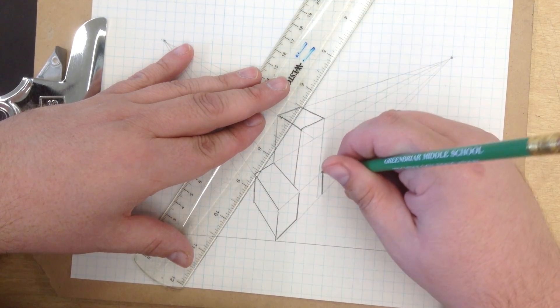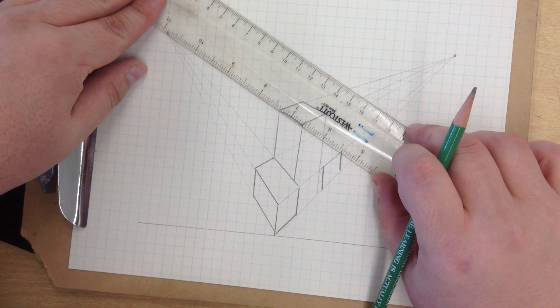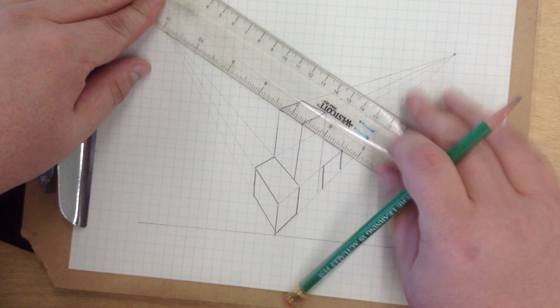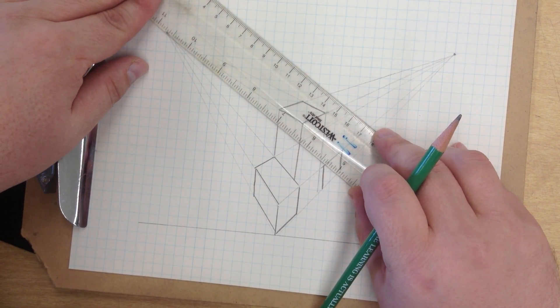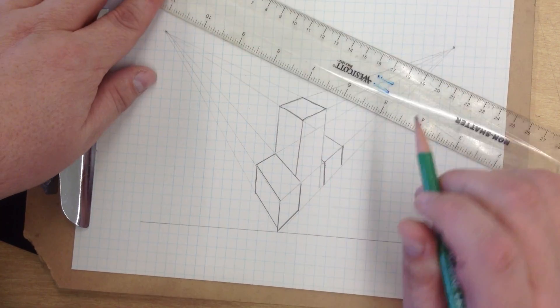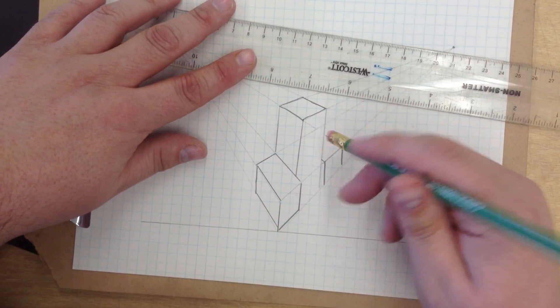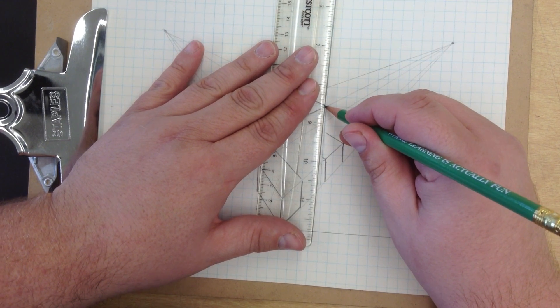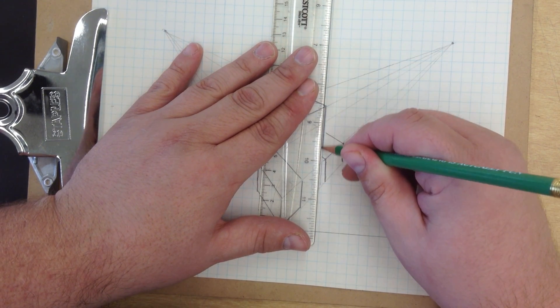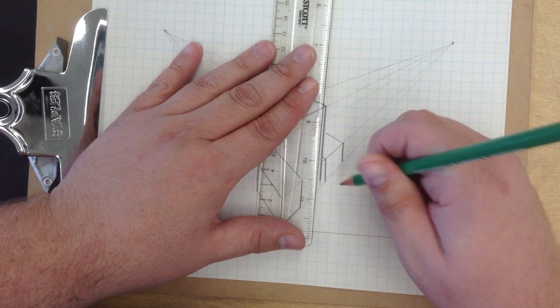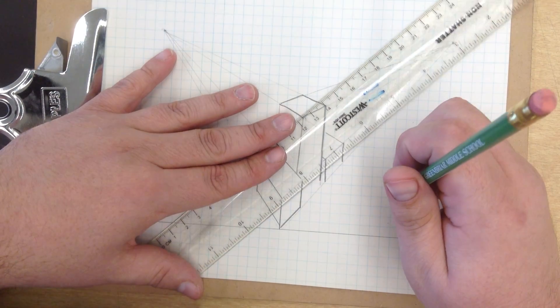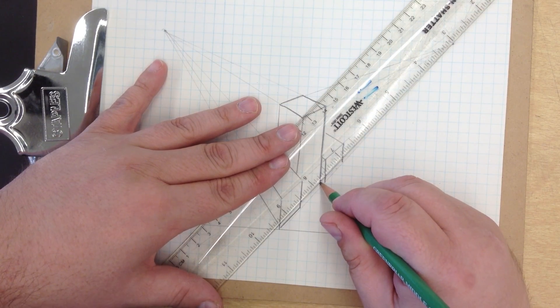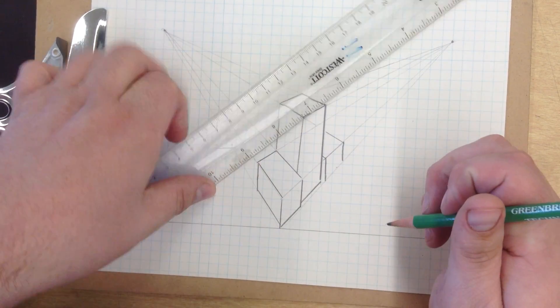Drop a vertical, connect with my vanishing points. Just a little bit right there. Darken up my object lines, just like so.